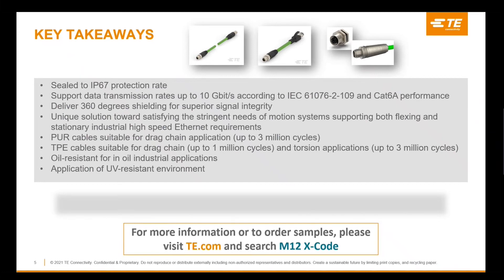M12 Xcode is a comprehensive connection technology experiencing a significant increase in interest as more companies look for higher network speeds and more reliable, high-quality data transmissions. The 8-pin M12 Xcode design is the most recent evolution in the industrial environment, supporting IP67 sealing requirements and data transmission rates up to 10 gigabits per second. Ethernet transmission speeds comply with IEC 61076-2-109 standards for CAT 6A performance levels, designed using 360-degree shielding technology for superior signal integrity.